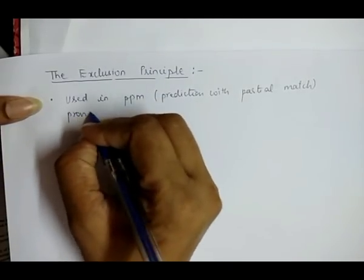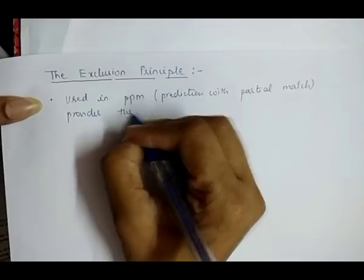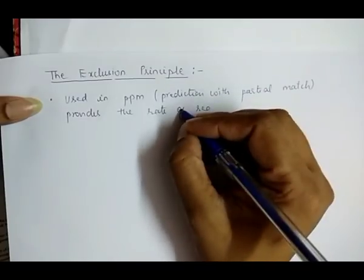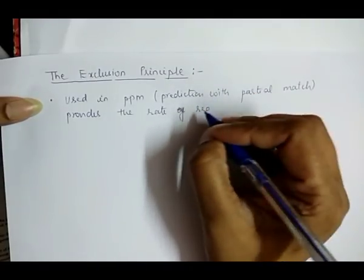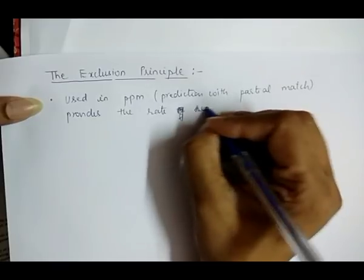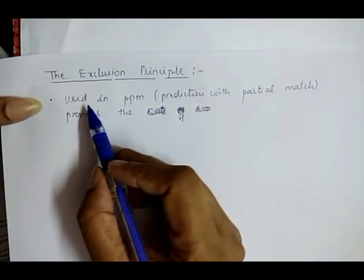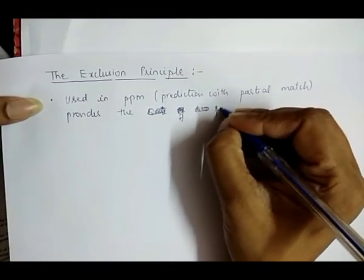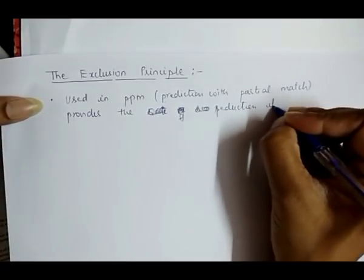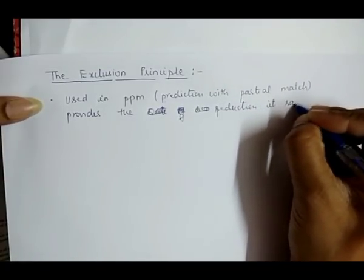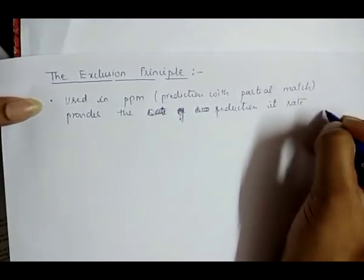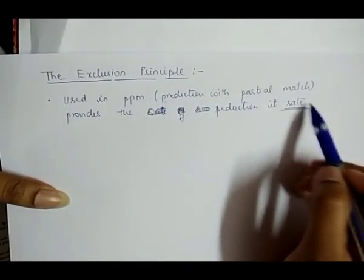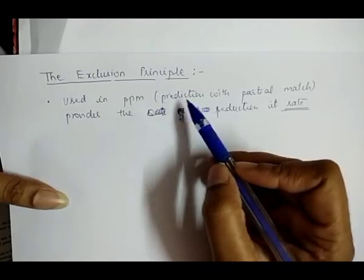It is used in PPM, that is Prediction with Partial Match, which provides the reduction in the rate. By using this principle, we can reduce the rate in the case of the PPM algorithm, which is used in the basic algorithm.